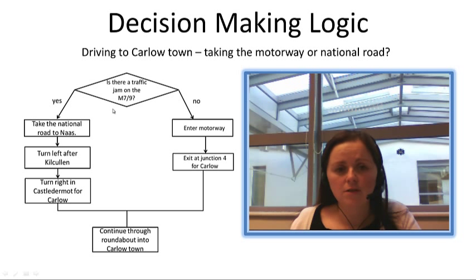Here in the diamond we have is there a traffic jam on the M7 or 9. If the answer is no, then we enter the motorway, exit at junction 4 for Carlow, and then continue through the roundabout into Carlow Town.